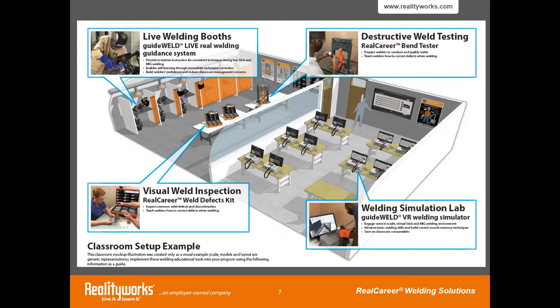Once students complete their welds, they move into visual inspection using the Weld Defects Kit. They can check what their weld looks like, compare it to the quality weld, and identify any issues. Then they determine whether corrections need to come from their welding machine settings or from their technique.